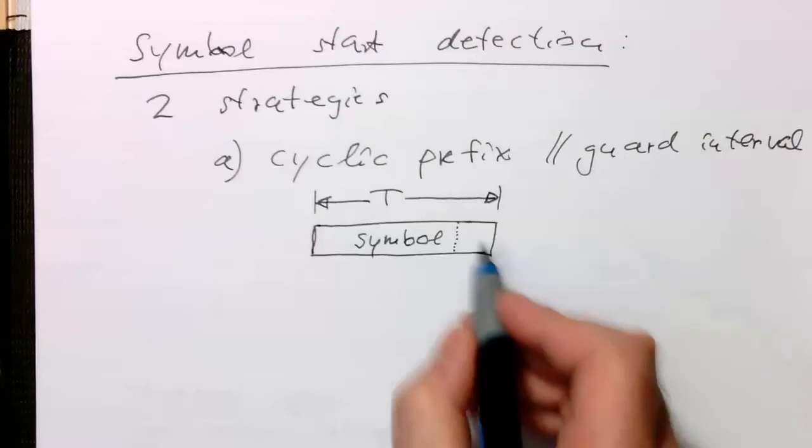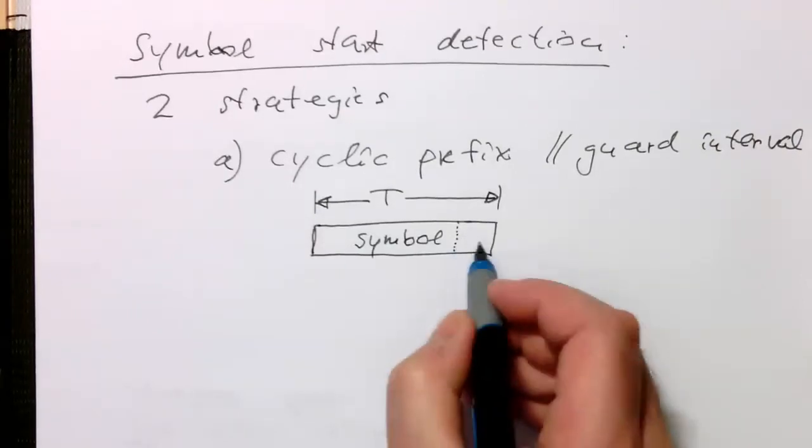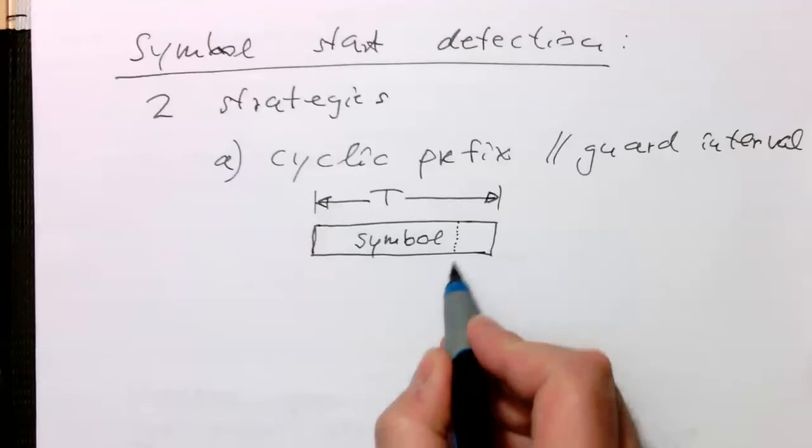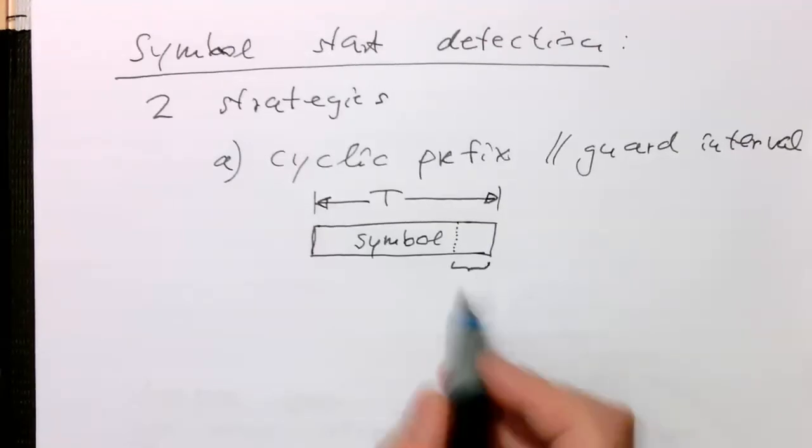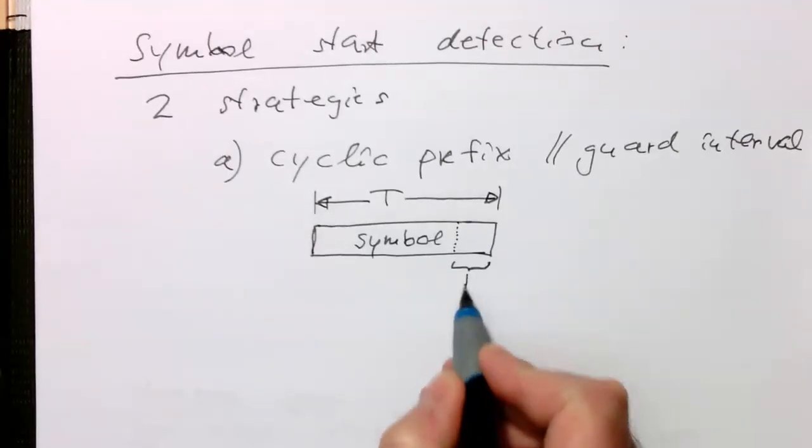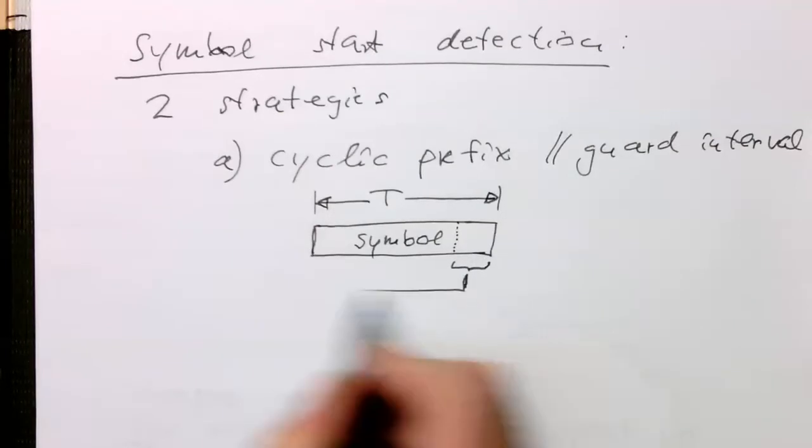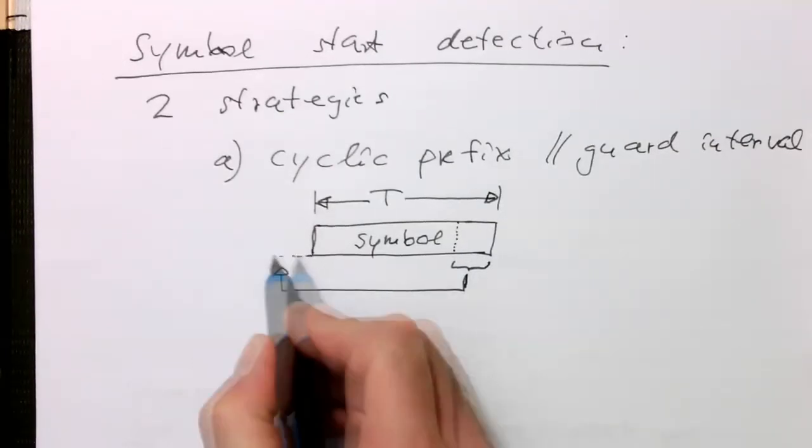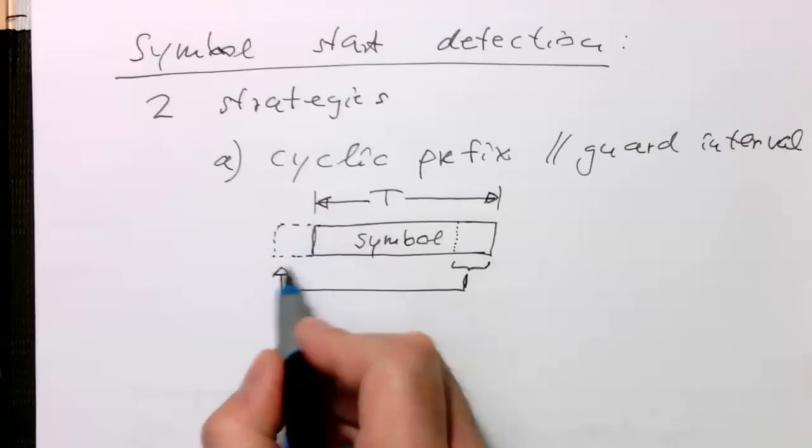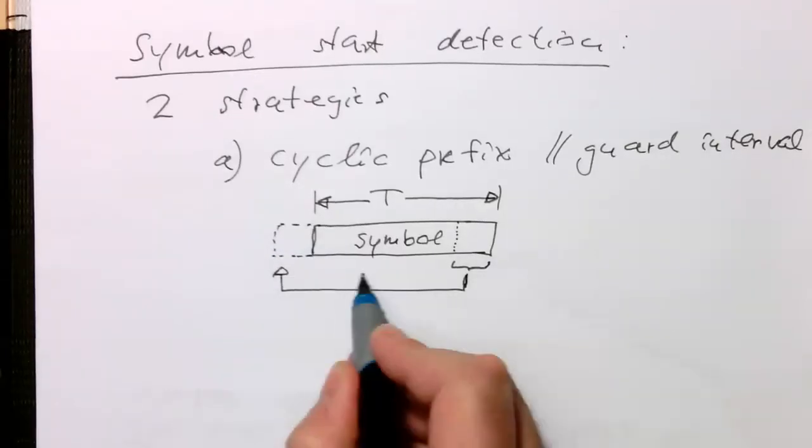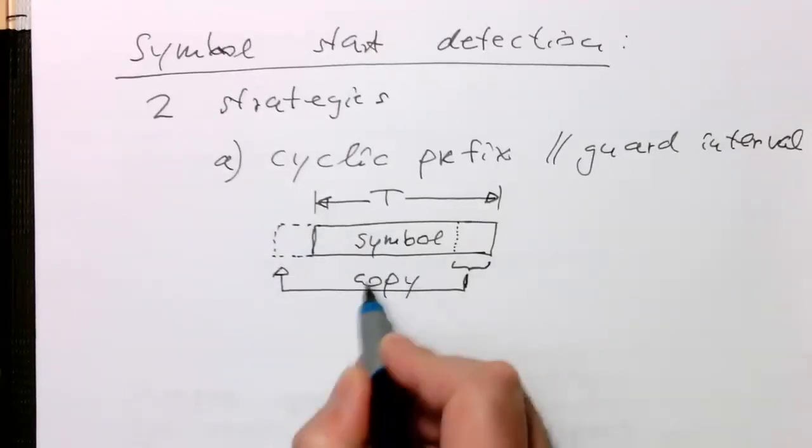And then here at the end, we have just a couple of samples. What we do is, we take these samples and copy them. We keep them here, but we copy them and also have them here in identical values. We create a copy which is here at the front.